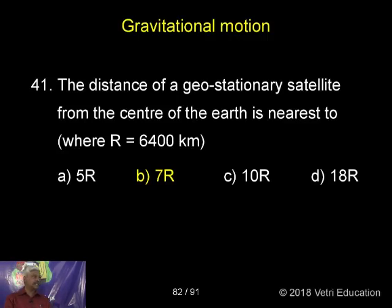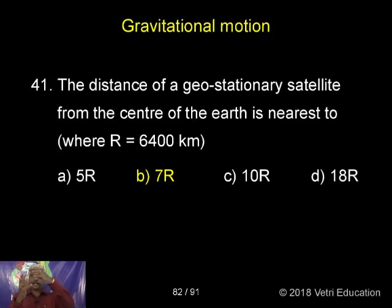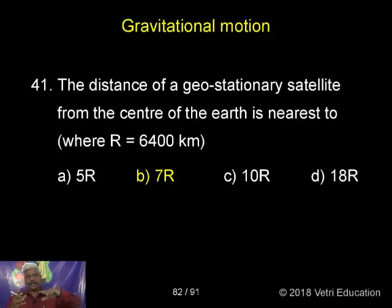The distance of a geostationary satellite from the center of the Earth is near R, where R is equal to 6,400 km. For a geostationary satellite, suppose the Earth rotates — the satellite also rotates with the same angular speed. Therefore, the position of the satellite when you view it from the Earth appears stationary.